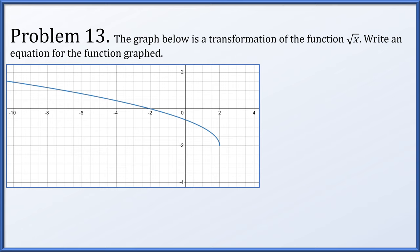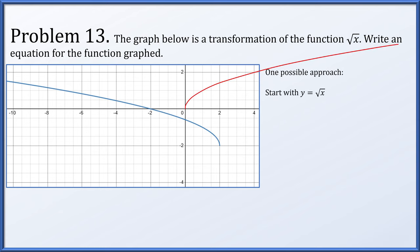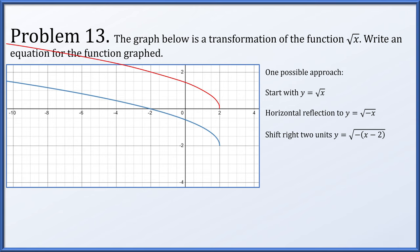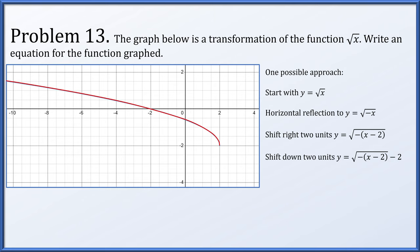Problem 13: find a possible equation for a graph that is a transformation of root x. Starting with y = root x in red, we horizontally reflect it by replacing x with minus x — now it goes in the correct direction. We shift it right two units by replacing x with x minus 2, being careful about the minus sign already introduced. Then we shift it down two units, achieving y = square root of negative x minus 2, all minus 2.